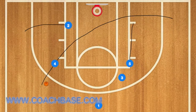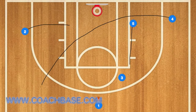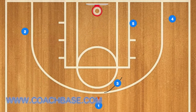At this time, 1 will use 5 and 3 as a screen, and 4 will pass to 1. 2 will clear out to the left wing, and 4 will use 5 as a screen and head to the right wing.